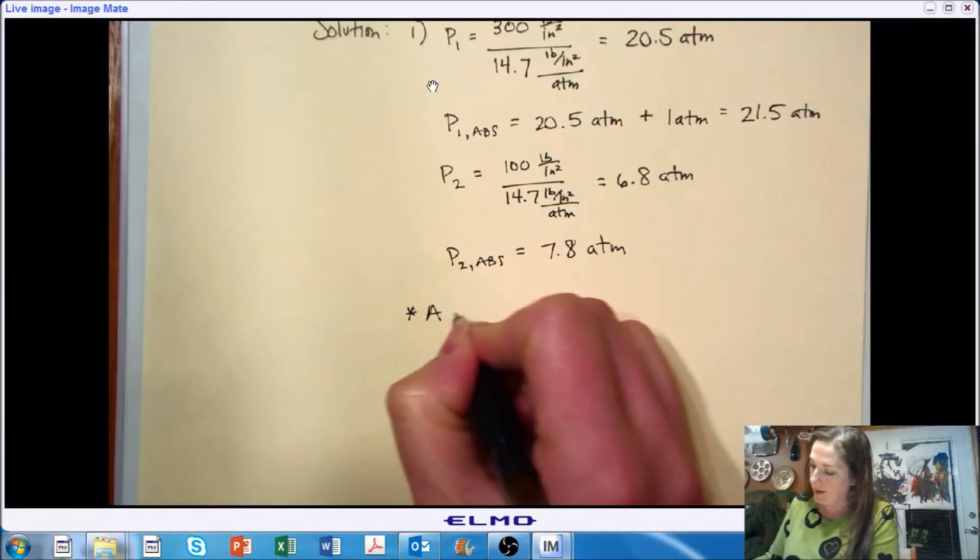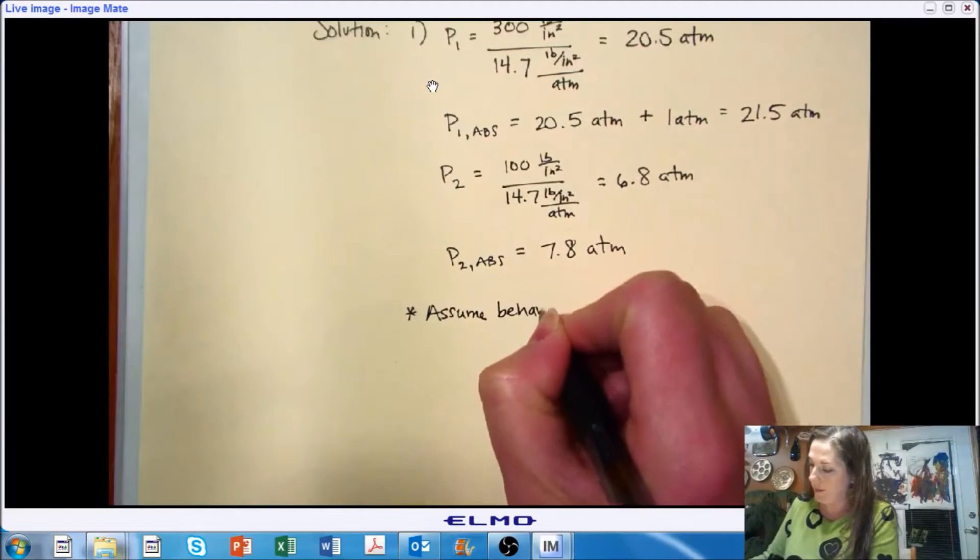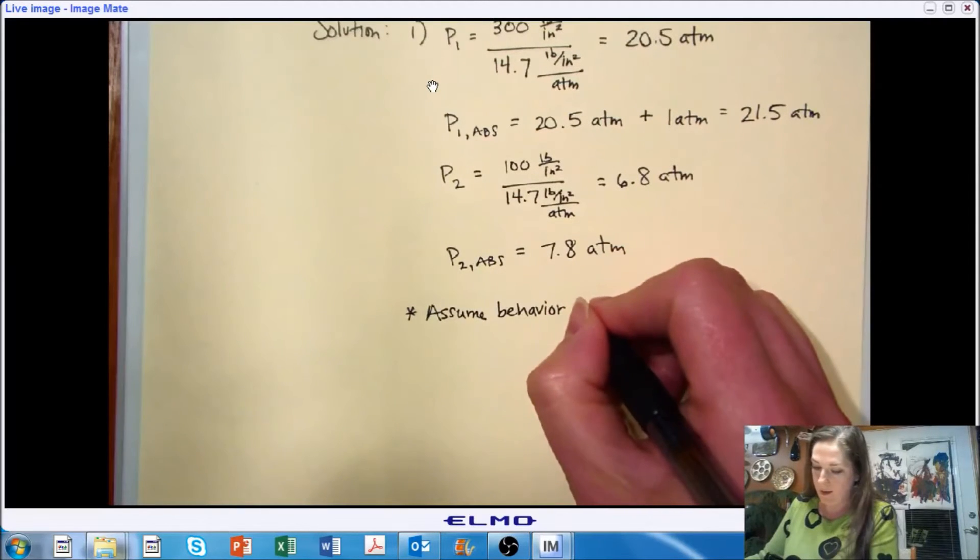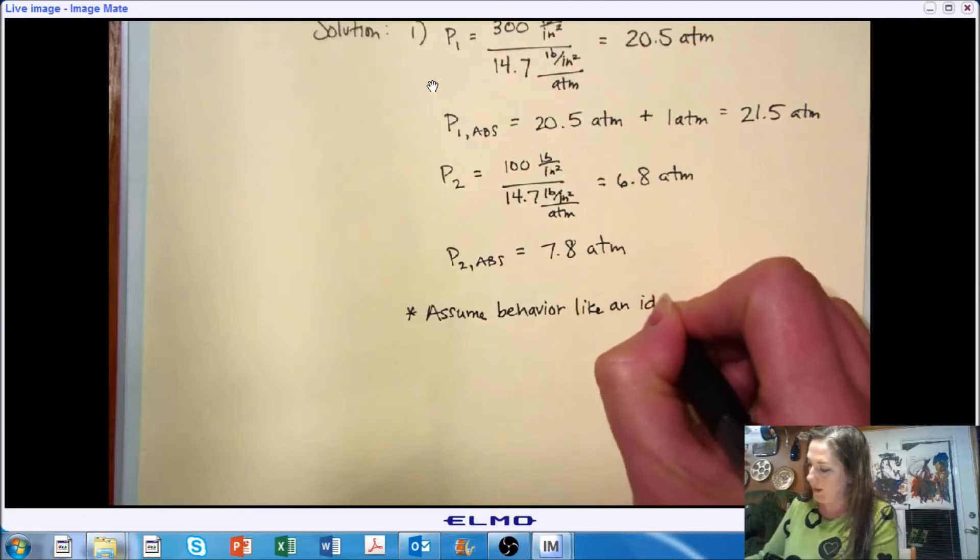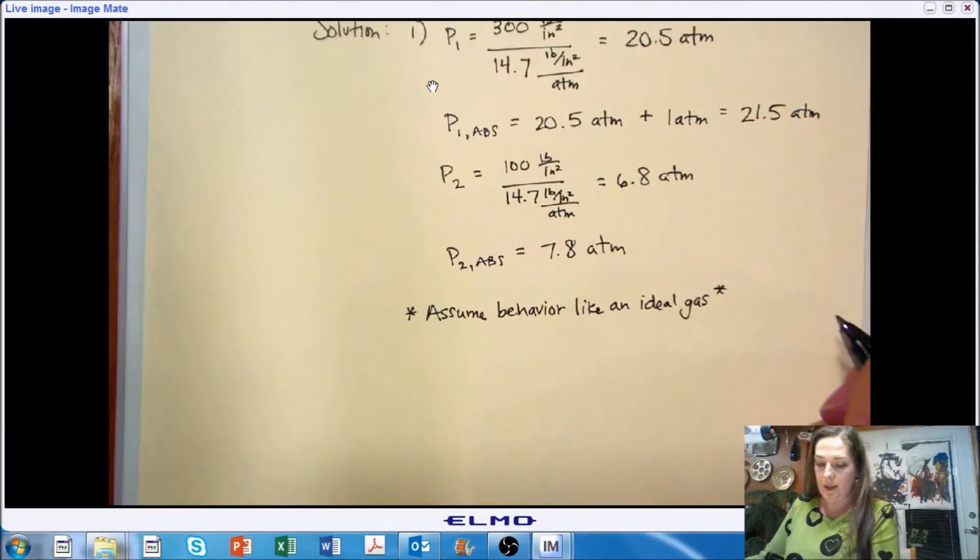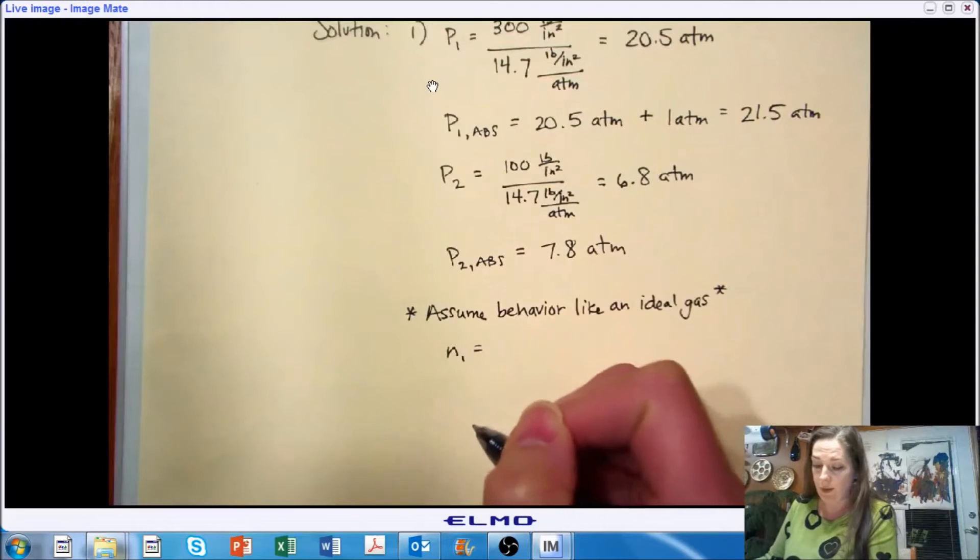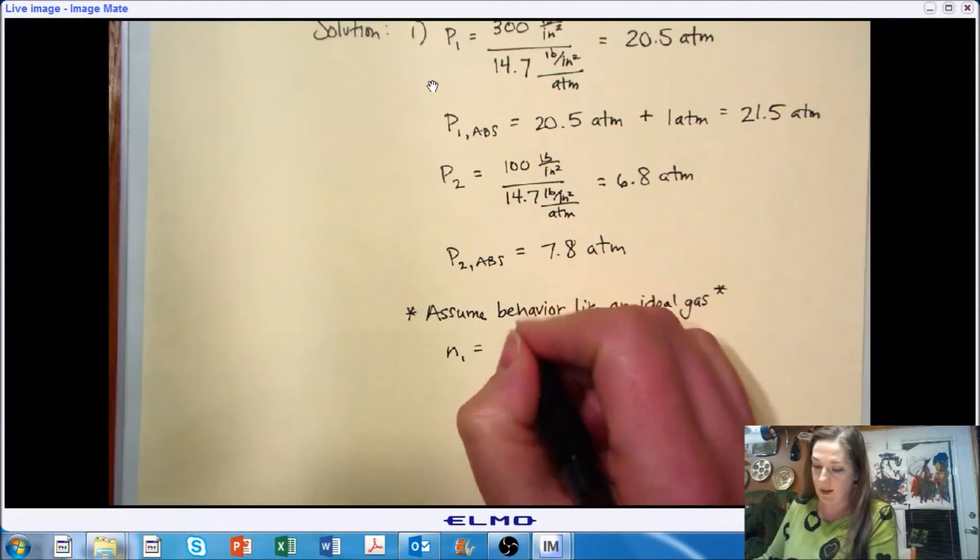Now I need to make an assumption here. In order to apply the ideal gas law, I need to assume that my gas in my cylinder is behaving like an ideal gas. And this is a side question for you that we're not going to answer today. But does O2 behave ideally when it's compressed? And that's a very good question to know how valid this assumption is. But like I said, we're doing this as an example. So today we are going to assume that it does behave like an ideal gas.